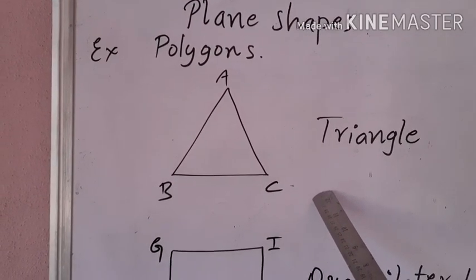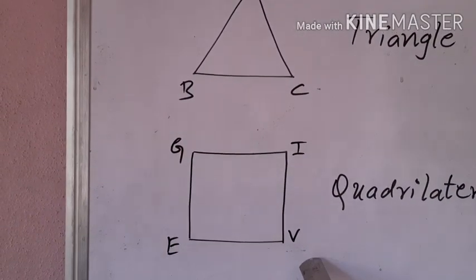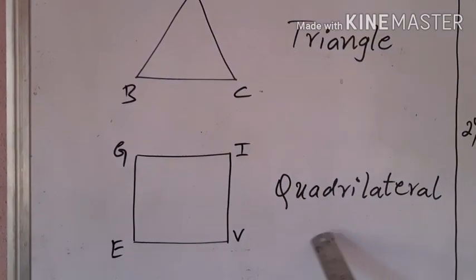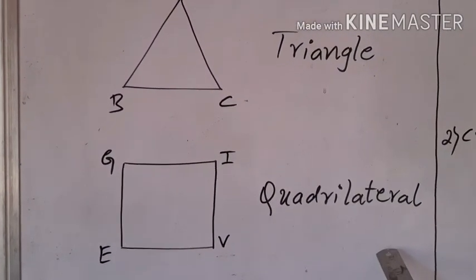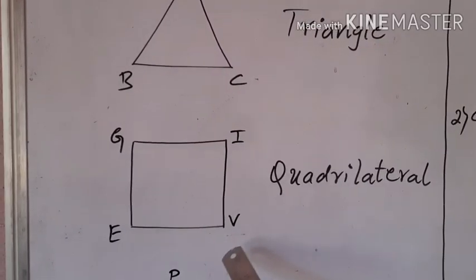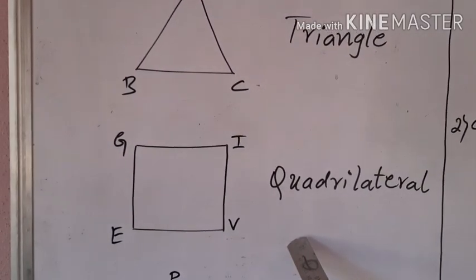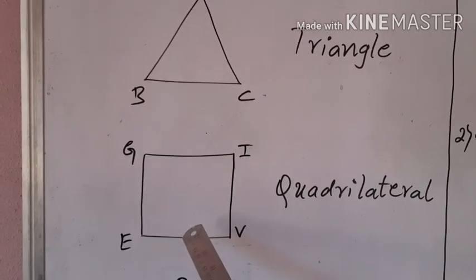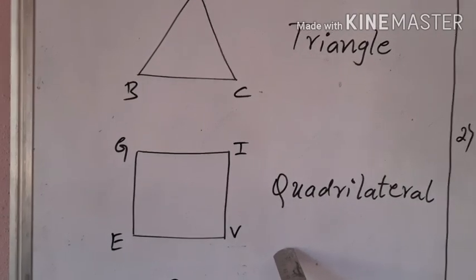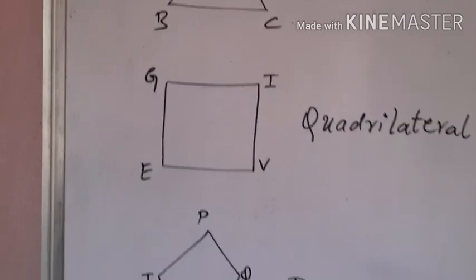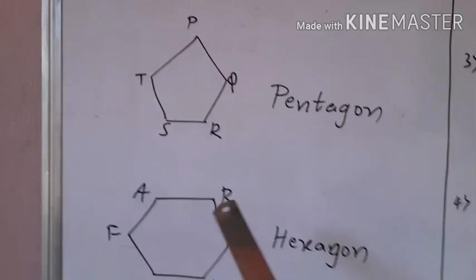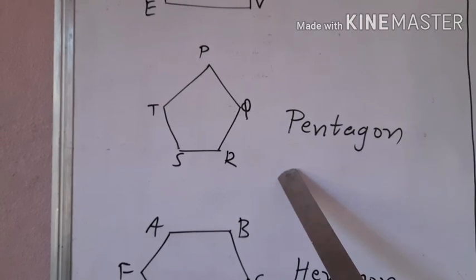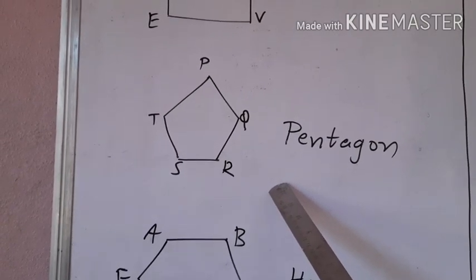The next shape is quadrilateral. 'Quadra' means 4 and 'lateral' means side. Any closed plane figure with 4 sides is called a quadrilateral. Similarly, this is called a pentagon, which is also a polygon because it has 3 or more than 3 sides.